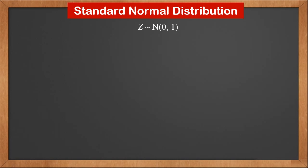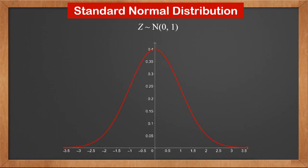N(0, 1) is called standard normal distribution. We use the letter Z to label it. The mean is 0, and the standard deviation and variance are 1. In the graph, we can see that the curve is symmetric about the y-axis, and drops to almost 0 at plus and minus 3, or 3 times the standard deviation. Half values are positive, half values are negative. P(Z > 0) is 0.5, and P(Z < 0) is also 0.5.